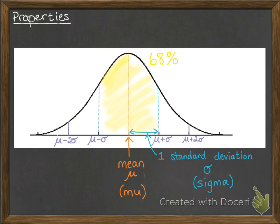That means the probability of picking a piece of data from that normal distribution that lies between one standard deviation below and one standard deviation above the mean is going to be 68%.